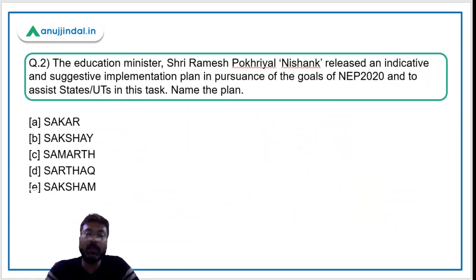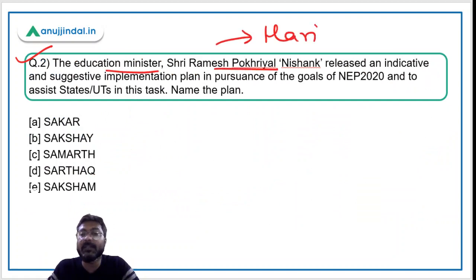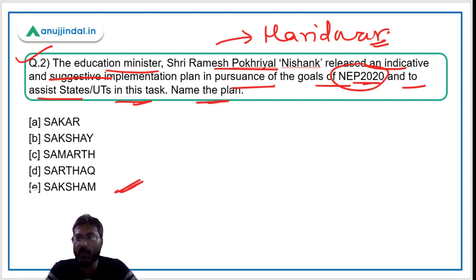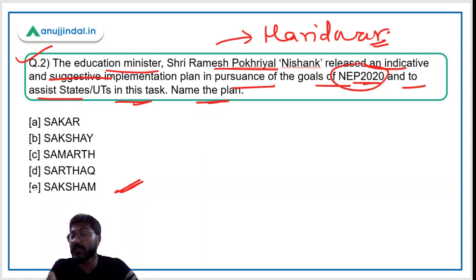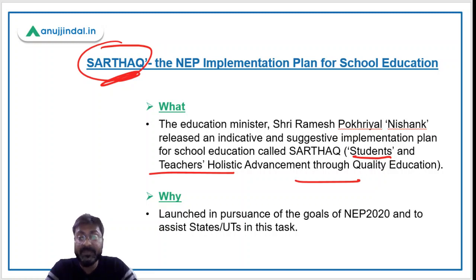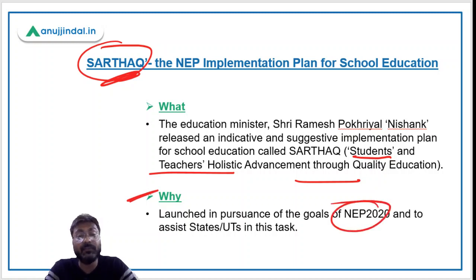Question 2: Education Minister Shri Ramesh Pokhriyal Nishank, whose Lok Sabha constituency is Haridwar in Uttarakhand, released an indicative and suggestive implementation plan in pursuance of the goals of the New Education Policy 2020 to assist states and UTs. You just have to remember the name of this plan. The name is SARTHAK, and its full form is Students and Teachers Holistic Advancement Through Quality Education. It has been launched in pursuance of the goals of New Education Policy 2020.